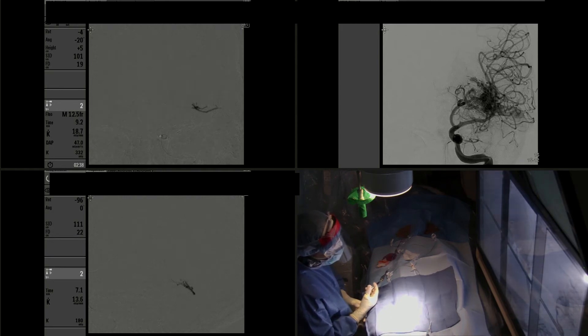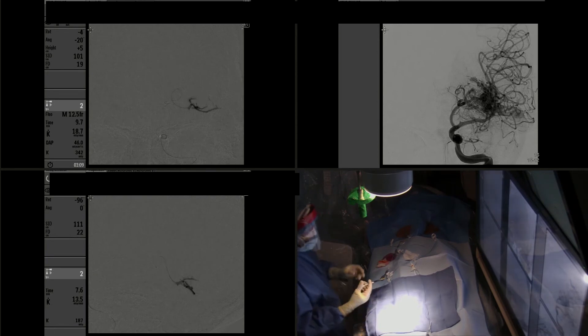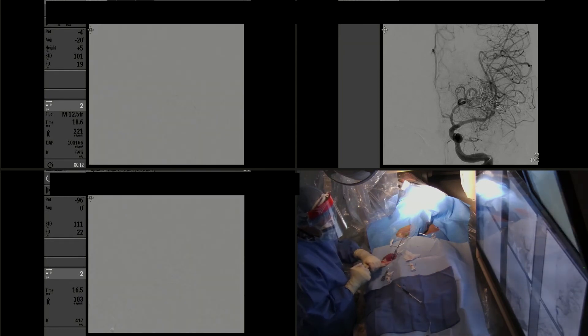We do not want the Onyx to go into the venous side this early into the injection, given that the feeders to the malformation are still patent. We are continuously watching for any potential reflux of the Onyx into the microcatheter proximally. Whenever there's reflux, like you're seeing at this point, we stop the injection to allow for the Onyx to solidify before we continue to inject the embolic material.